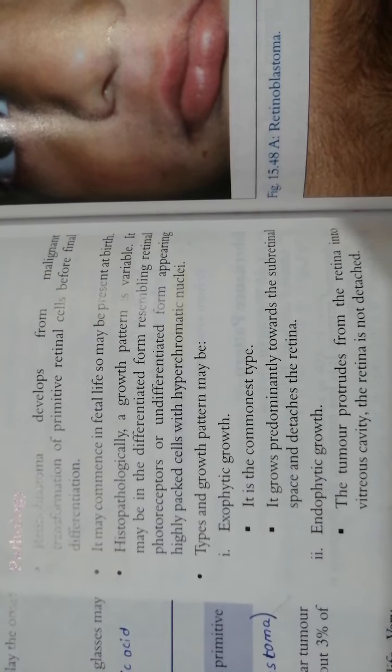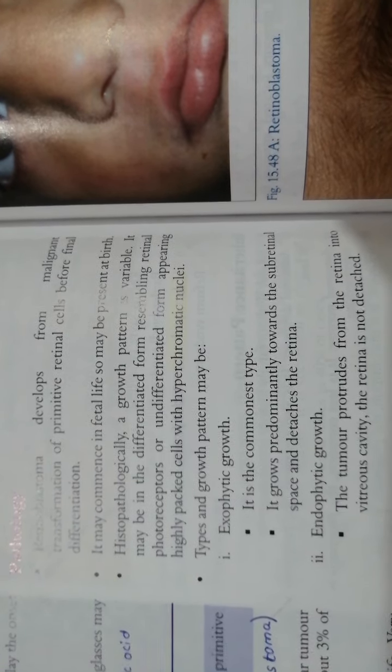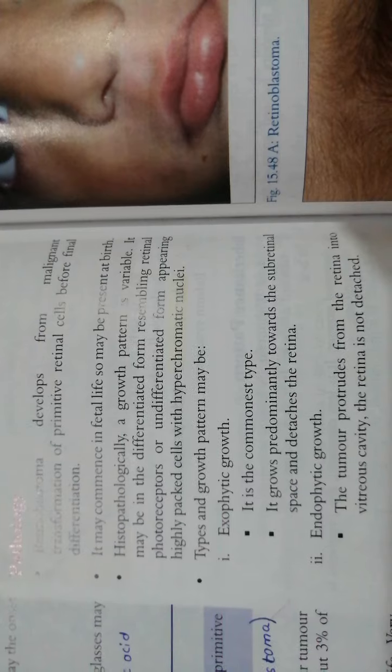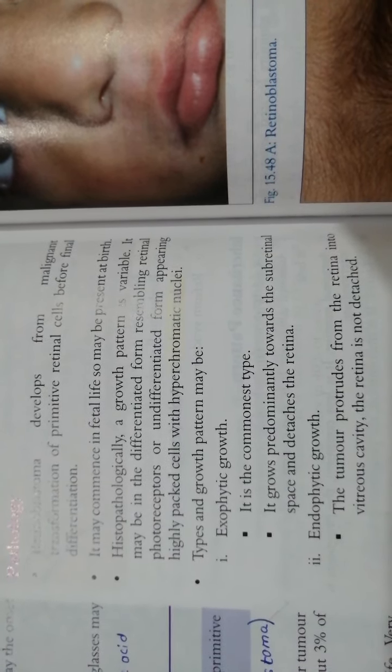If cells are undifferentiated type, then they will be quite closely packed and hyperchromatic. If differentiated cells are composed, then the cells will be quite closely resembled to normal retina photoreceptors.